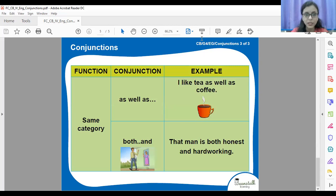Now, last set of words. As well as, both and, and. These two are used in combination. Like both and and is used in combination. And as well as these two are used for showing same category. Look at the sentences. I like tea as well as coffee. So we can also use and. I like tea and coffee. I like both tea and coffee. So similar category. That man is both honest and hardworking. That man is honest as well as hardworking. So you can use both of them in both the situations. So to indicate same category, same idea, these words are used.